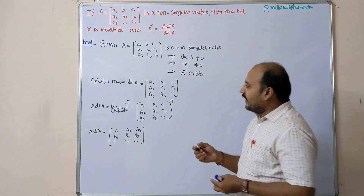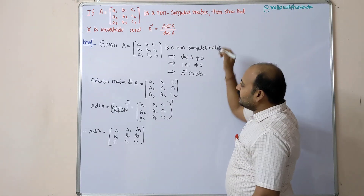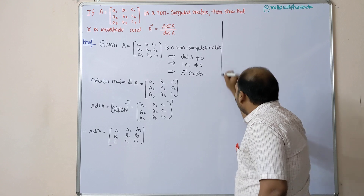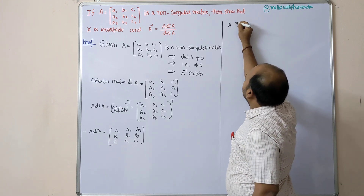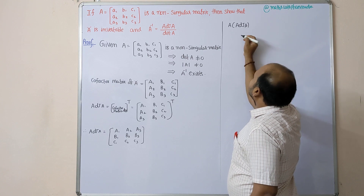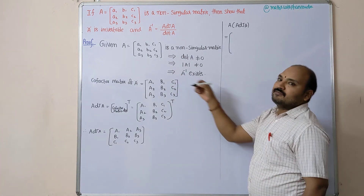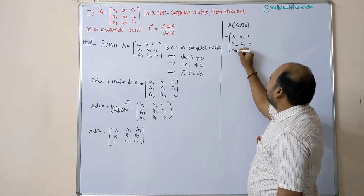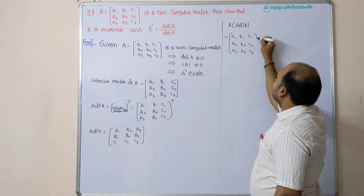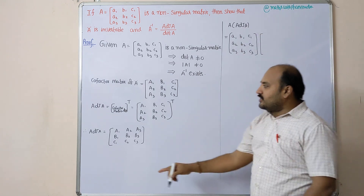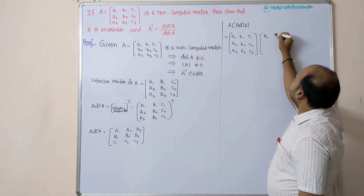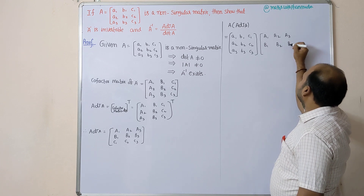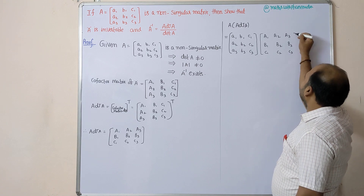Next we are going to calculate A into adjoint A. We need to multiply matrix A = [a1 b1 c1 / a2 b2 c2 / a3 b3 c3] by adjoint A = [A1 A2 A3 / B1 B2 B3 / C1 C2 C3]. The order of matrix A is 3×3 and the order of adjoint A is also 3×3, so matrix multiplication is possible.